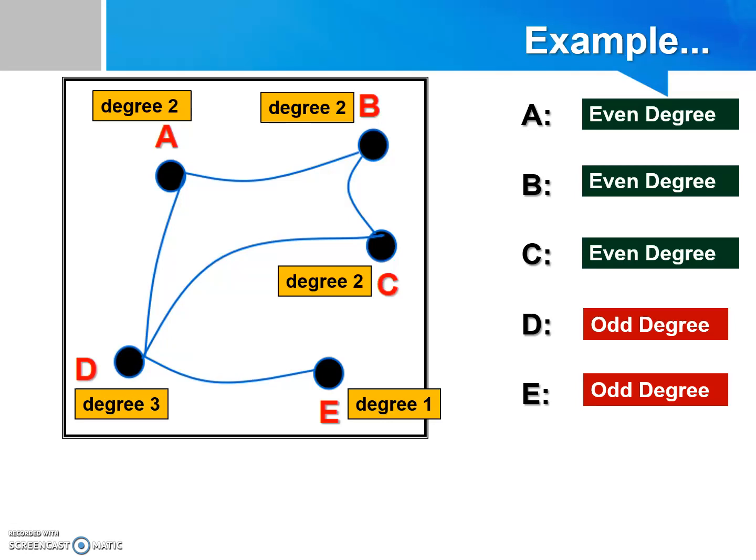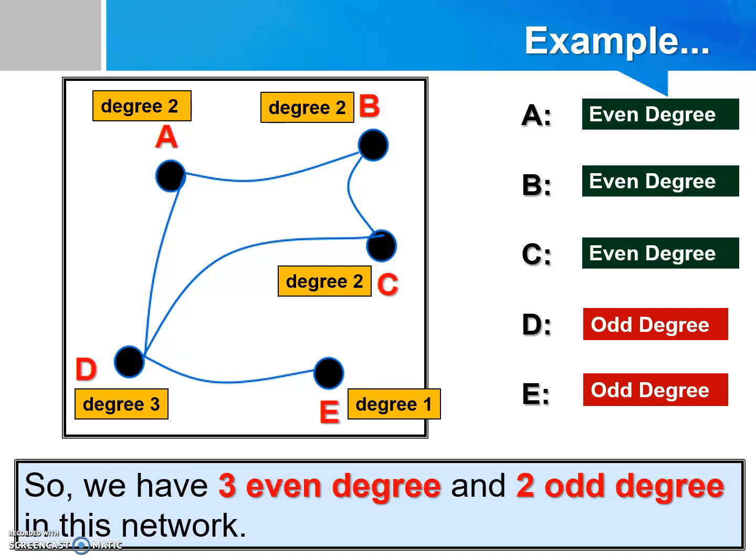So we can conclude that there are actually 3 even degrees and 2 odd degrees in this network.